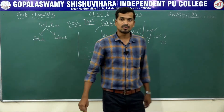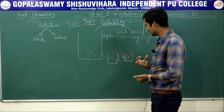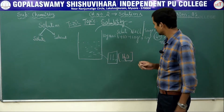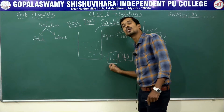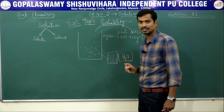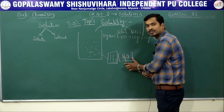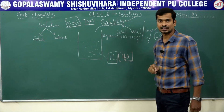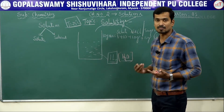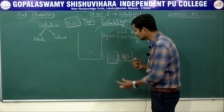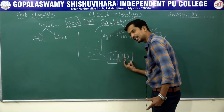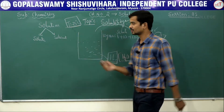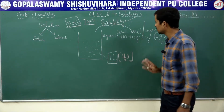The solubility of a given solvent is defined as the maximum amount of solute dissolved in a unit volume — generally taken as 1 liter — of a particular solvent, at a given temperature and pressure (in case of a gaseous solute). This is called the solubility of a solute in a given solvent.